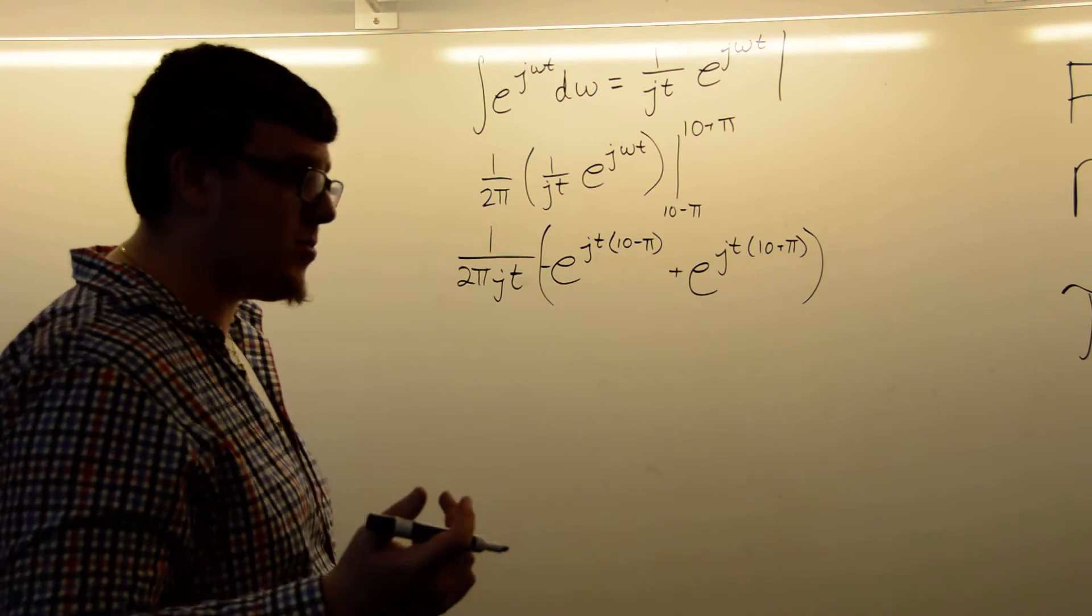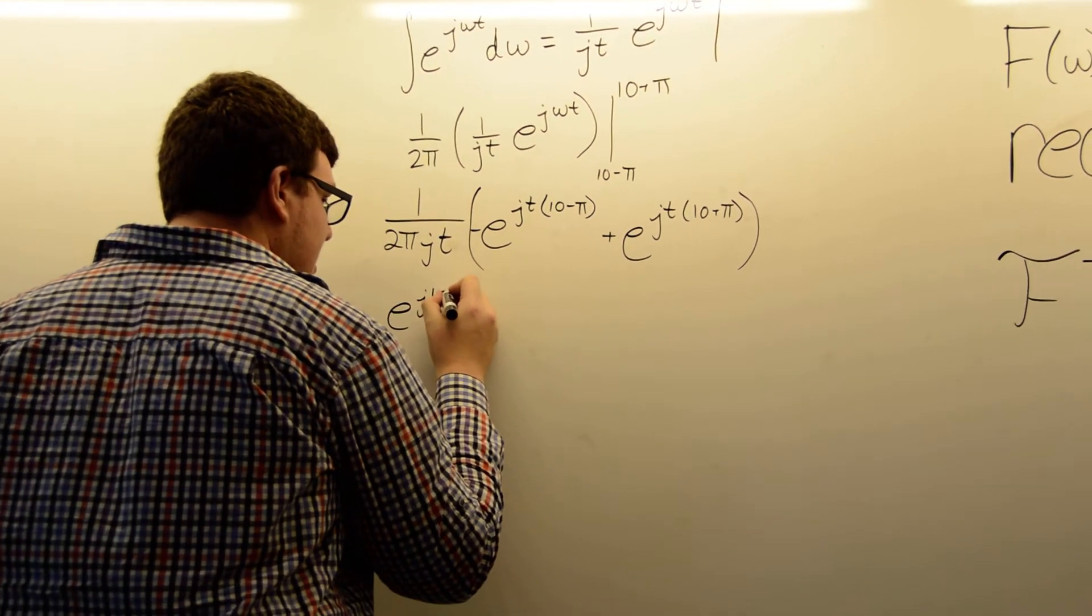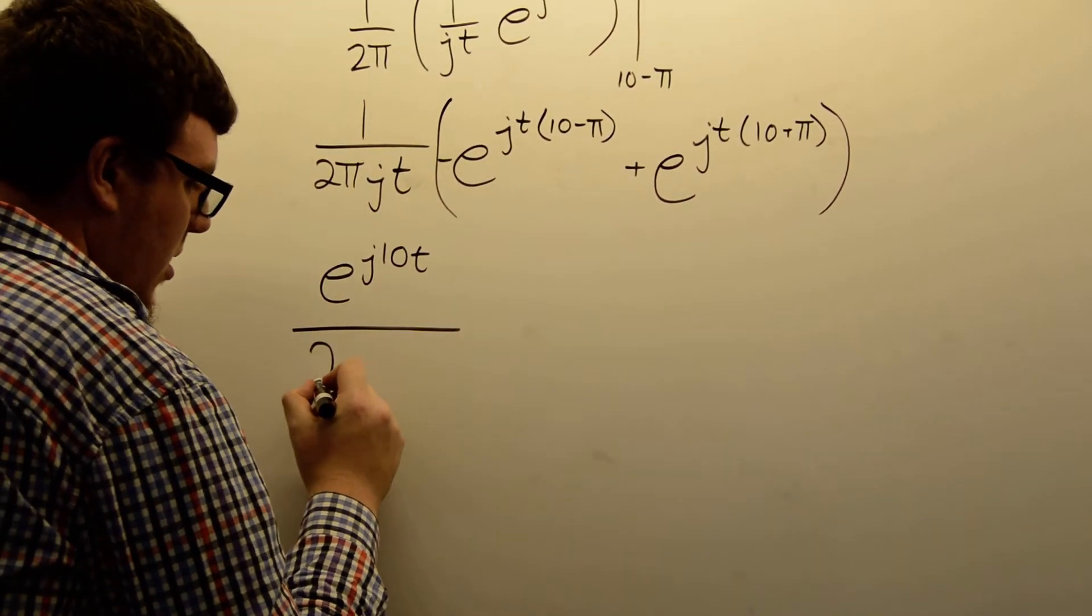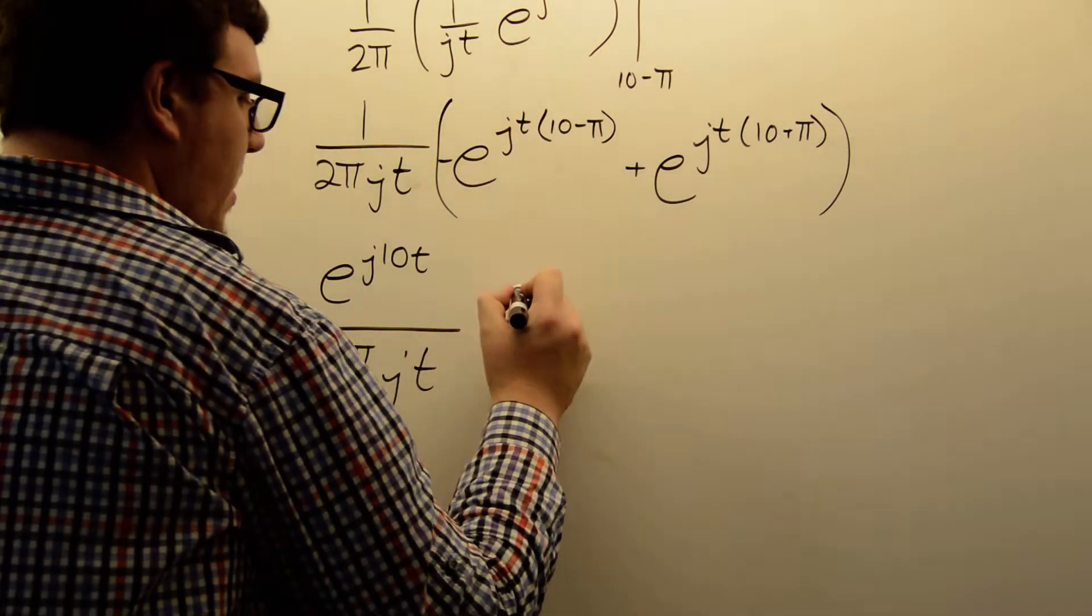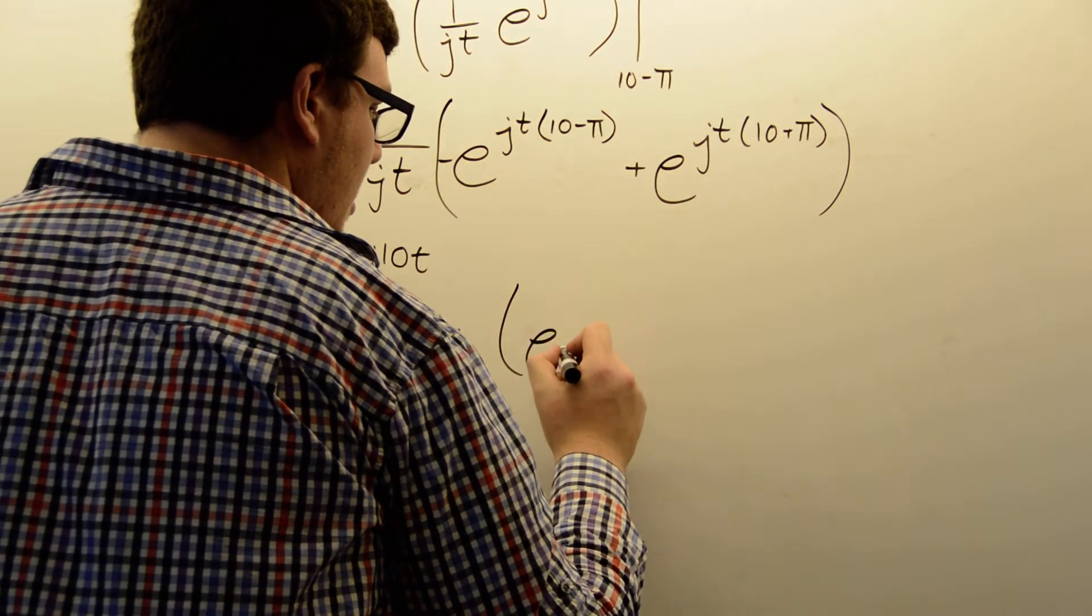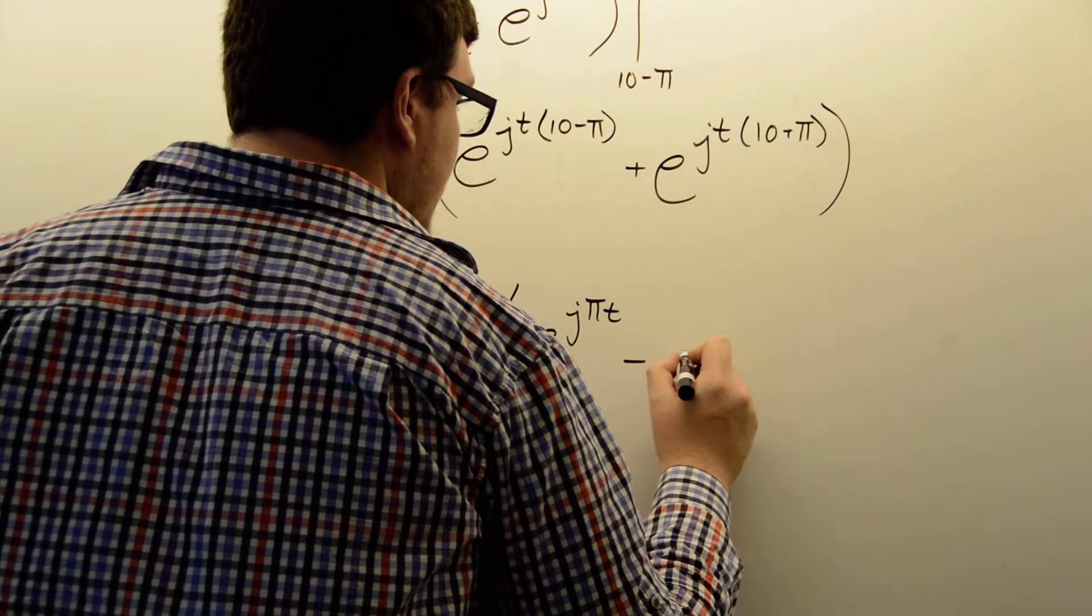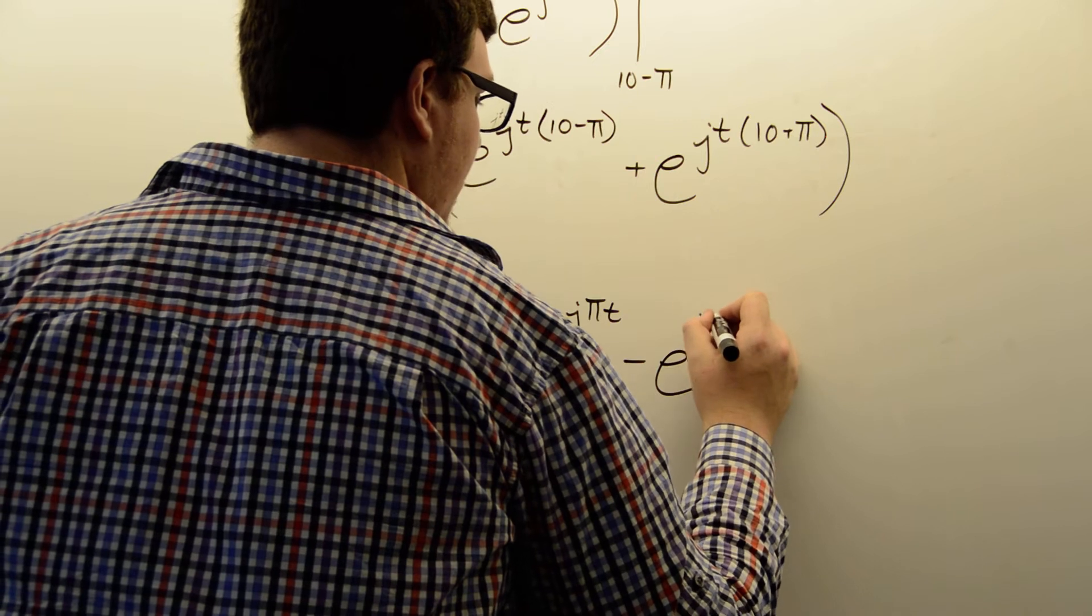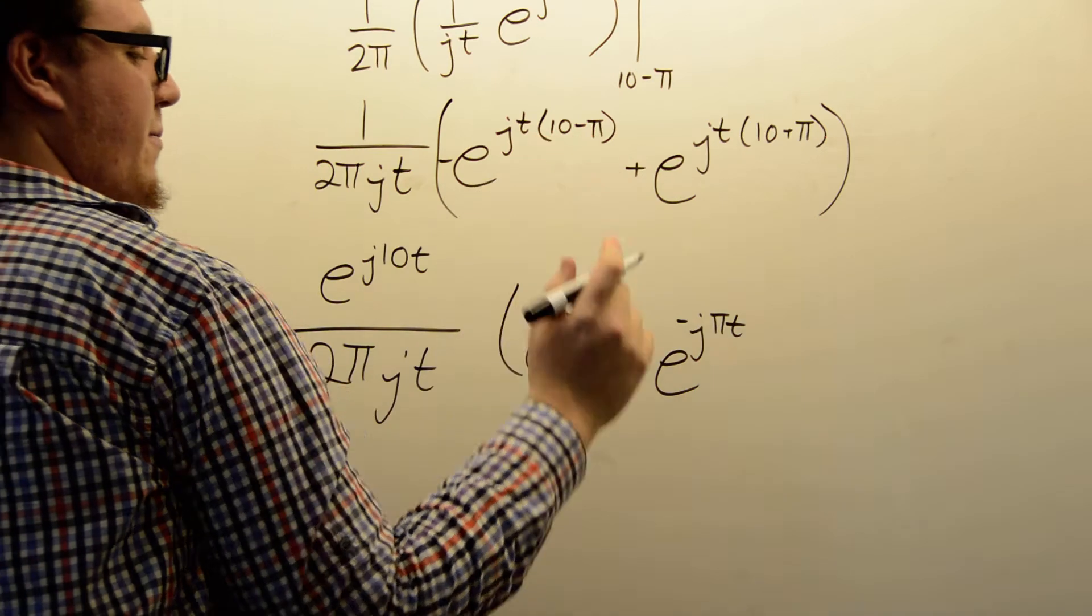So, I will factor that out as well. So, we have e to the j10t over 2πjt. And in here, we have e to the jπt minus e to the negative jπt, because it's a negative π.